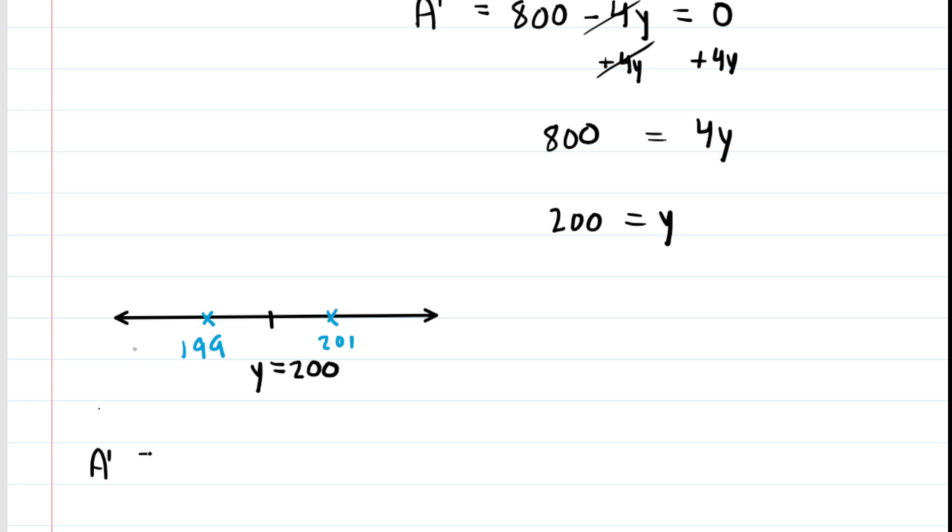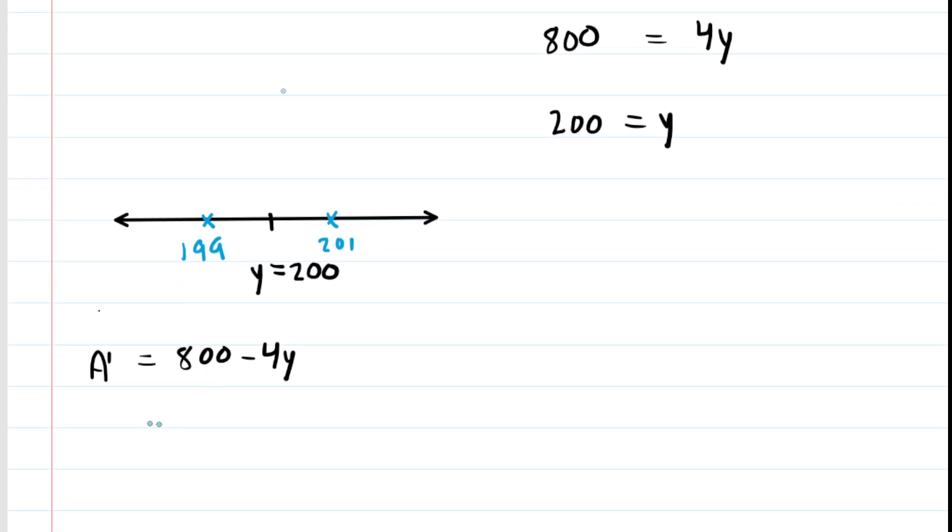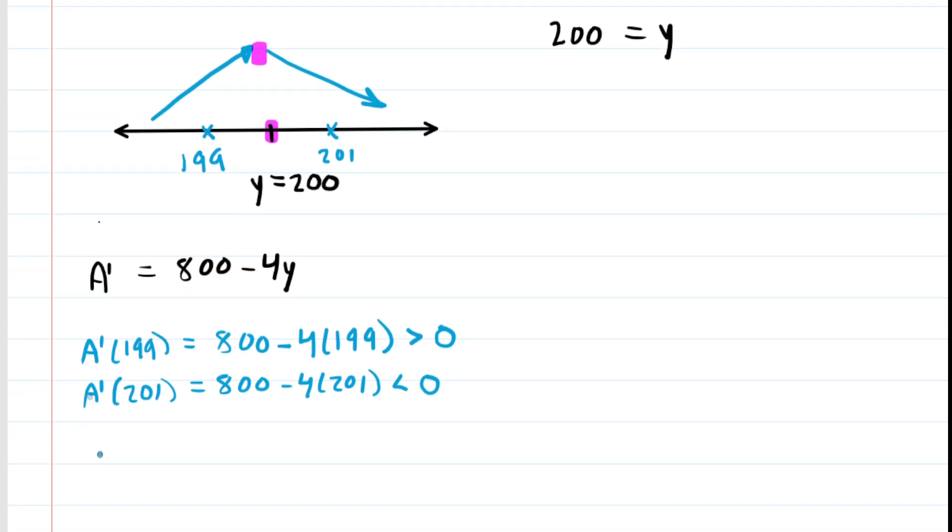Recall that the derivative A prime was equal to 800 minus 4y. We're going to test 199 by plugging that into the derivative. When you compute A prime of 199, you will find that the value is positive, greater than zero. When the derivative is greater than zero, that means your function is increasing. Now we plug in the other test value of 201. When we do that, we get a derivative that is negative, less than zero. When your derivative is negative, your function is decreasing. We can see that directly at the critical point, there is a local maximum. Therefore, at y equals 200, the area is maximized according to the first derivative test.